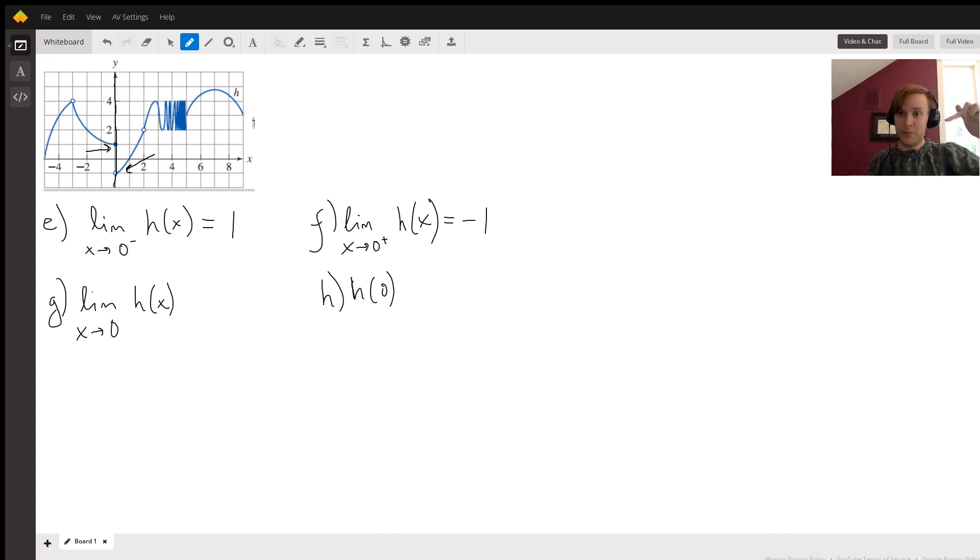Whatever number we're approaching as we approach X equals zero from the left has to be the same as the number we're approaching when we approach X equals zero from the right. They have to agree. And if they don't agree, then the limit does not exist.